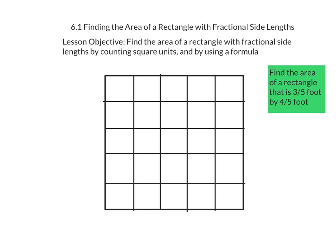One strategy that you can use to figure out the area of a rectangle that has a fractional side length is by counting up squares, which means that we're going to draw ourselves a model. Now since 5 is our denominator, we can split our model into 5 pieces vertically and horizontally.